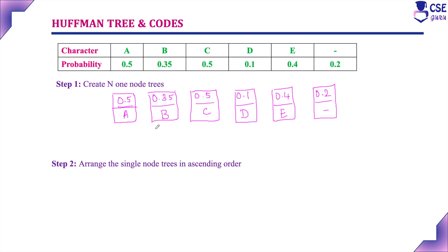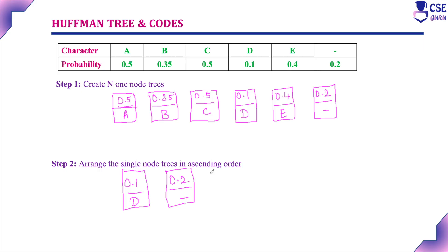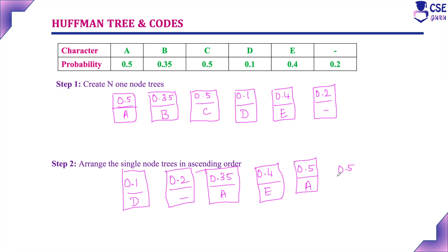Next step: arrange these N one-node trees in ascending order — the smallest probability value comes first. Symbol D with probability 0.1 is the smallest, so it is placed first. Then 0.2 with hyphen, then 0.35 with B, then 0.4 with E, then 0.5 A and 0.5 C both come last.